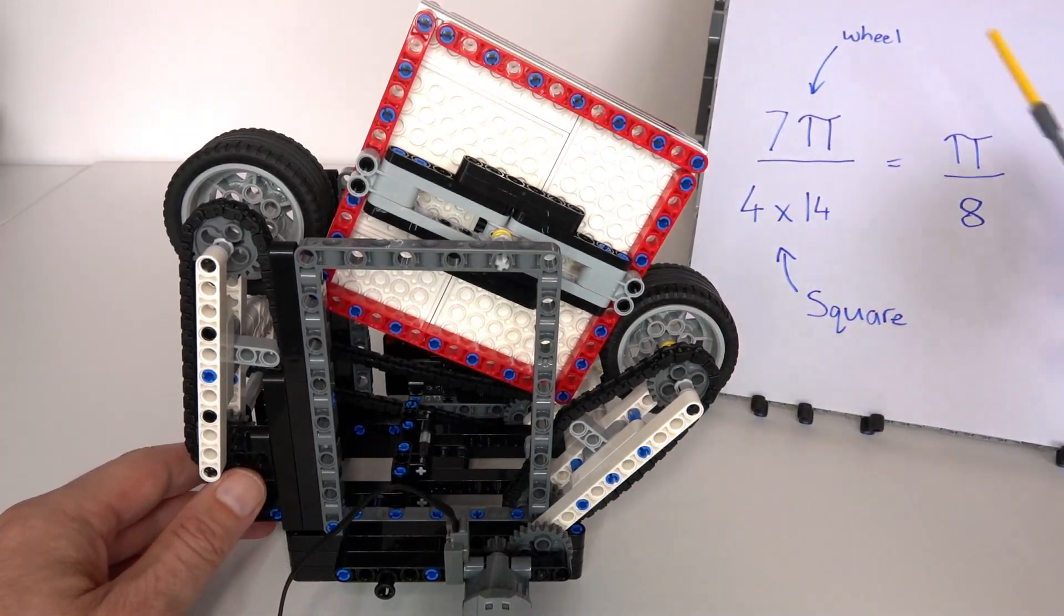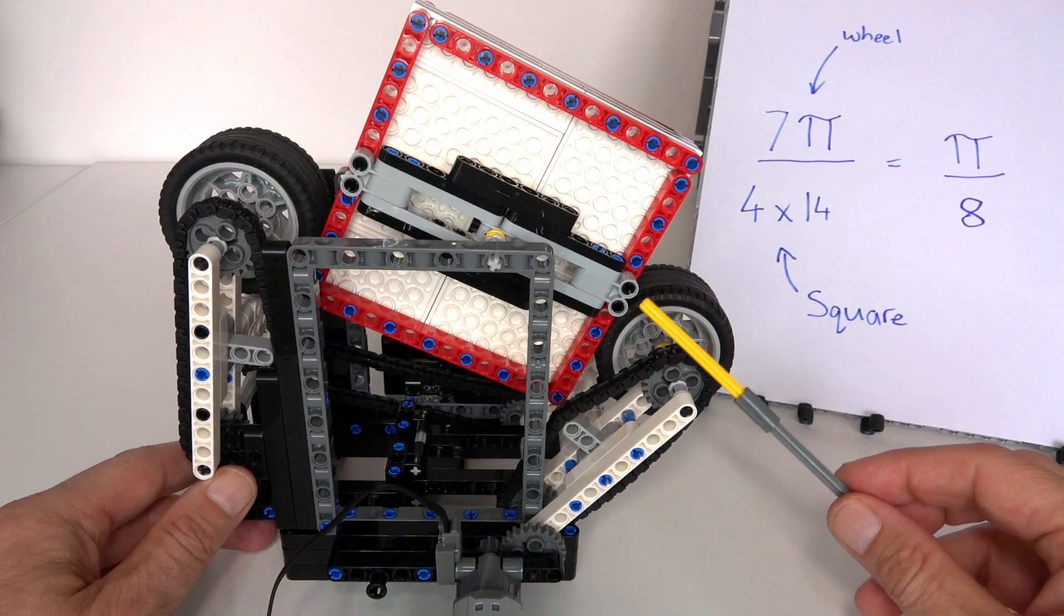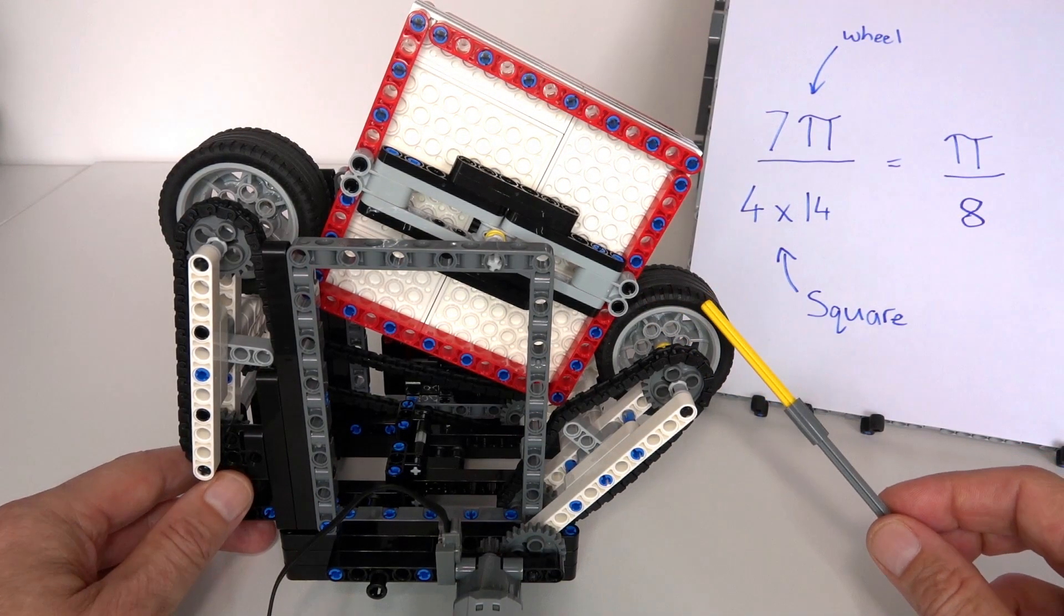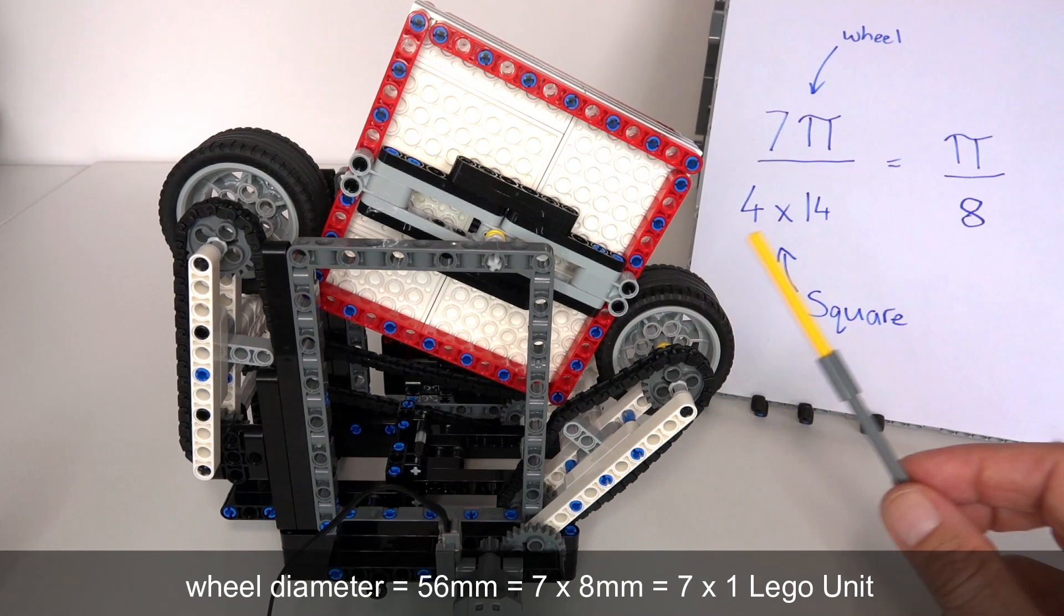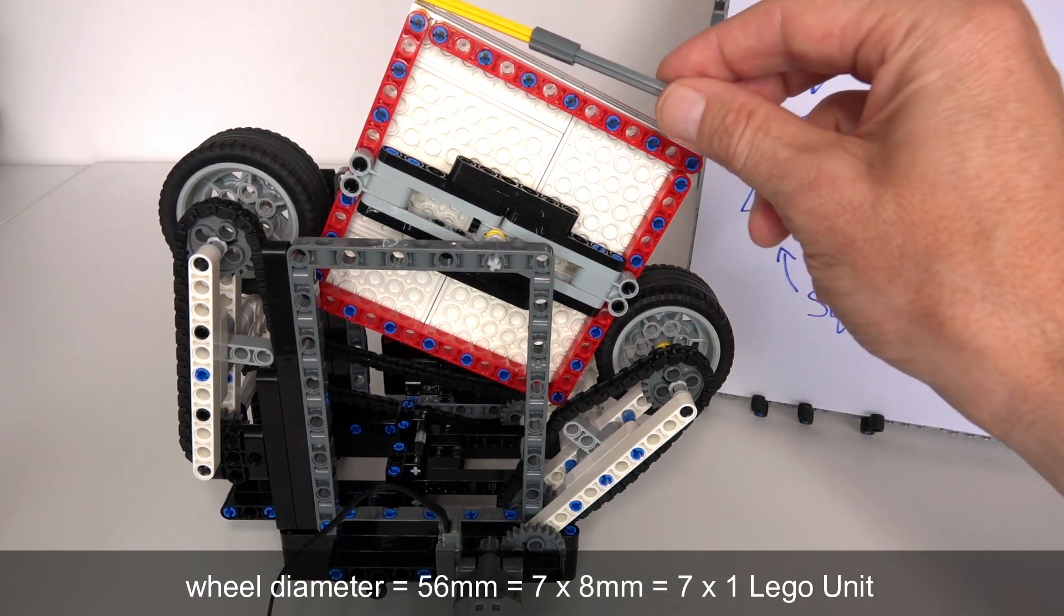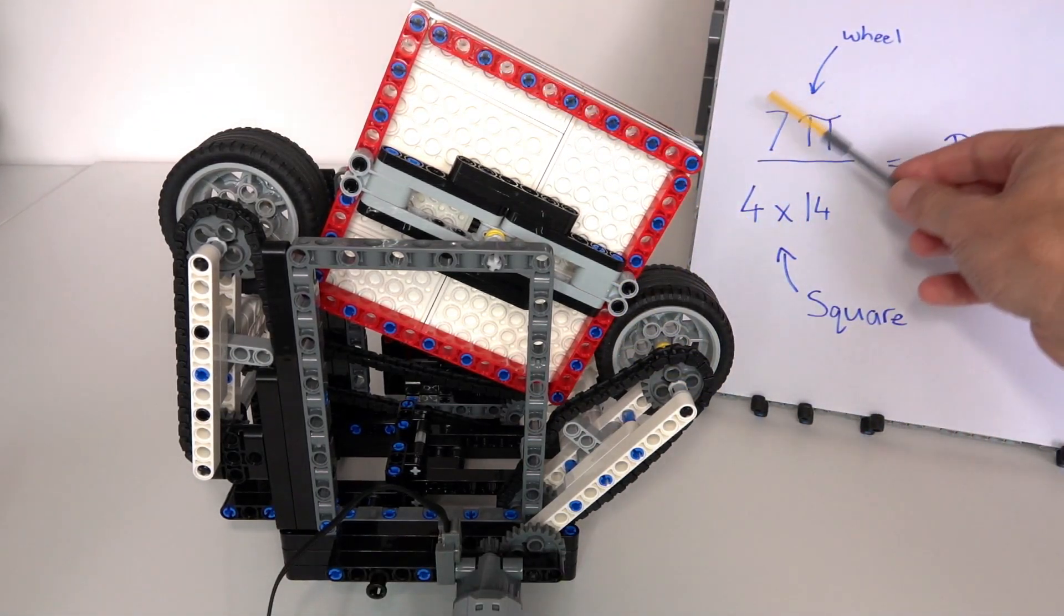The gearing ratio between this wheel and the bigger square wheel: I've chosen a wheel that has a diameter of 56 millimeters. 56 millimeters is seven Lego units—remember that Lego units are increments of eight millimeters—and that is driving a square with a side length of 14 units.